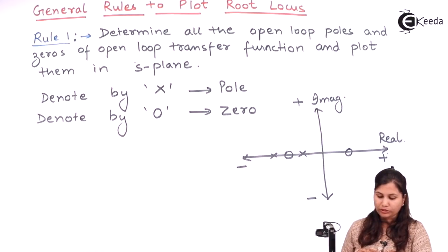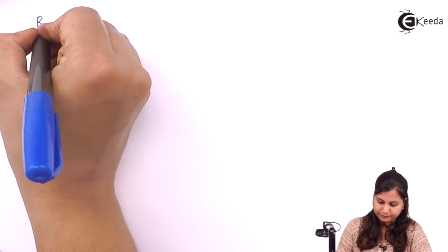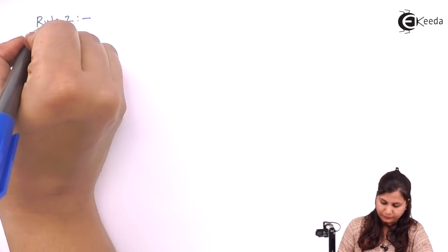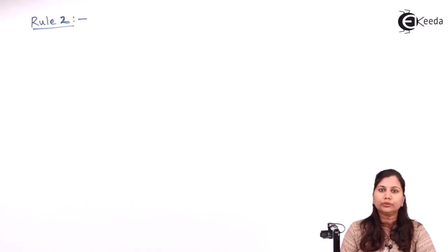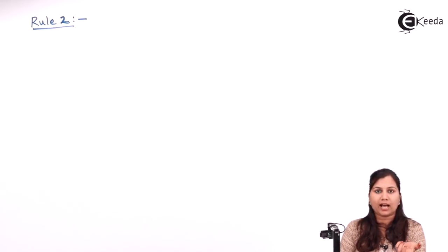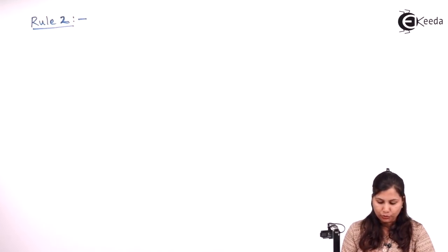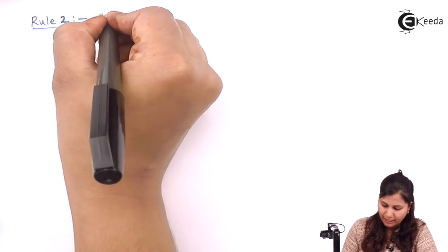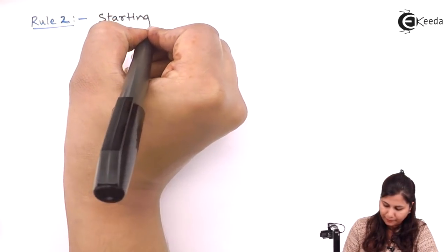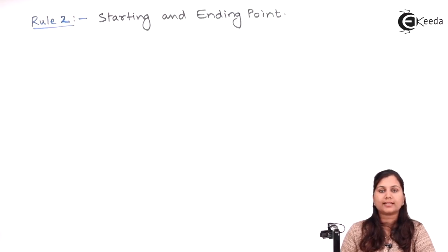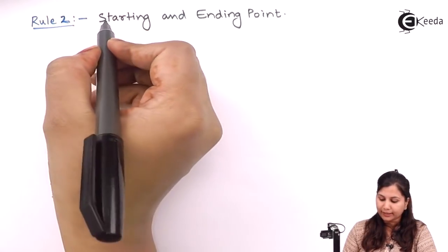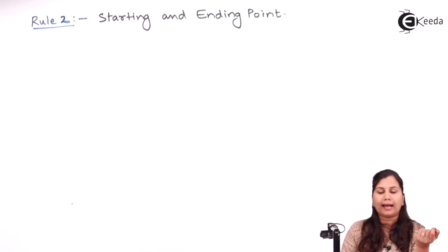Now the second rule is related to the starting and ending points of a root locus — that is, from where the root locus will start and where it is going to end. The root locus starts from the poles and terminates at the zeros of the system. The starting point is the open loop pole and the ending point is the zero of the system.